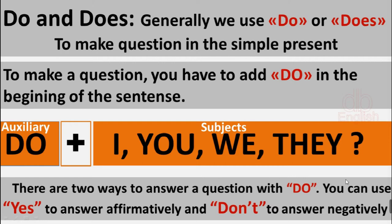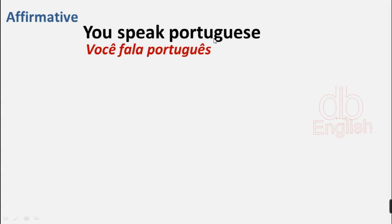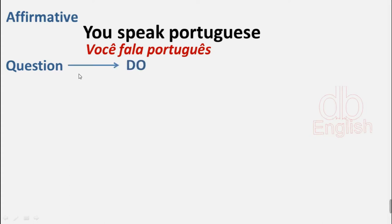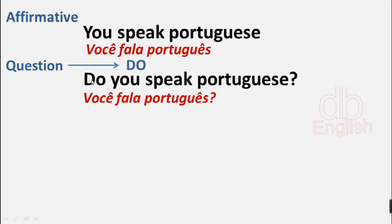There are two ways to answer a question with 'do': you can use 'yes' to answer affirmatively and 'don't' to answer negatively. Affirmative: you speak Portuguese. To ask a question, you have to use 'do' — for example: do you speak Portuguese?